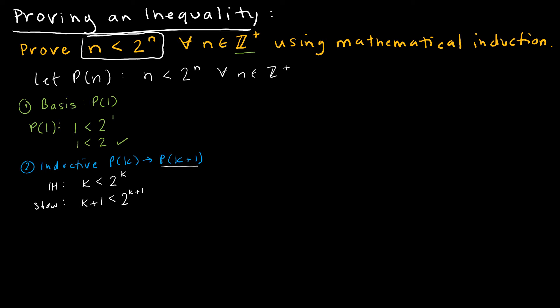So now I'm going to go back to my inductive hypothesis: k is less than 2 to the k. I'm going to do whatever I need to make the left side match what I want to show, so I'm going to add 1 to each side. Here's the tricky part — you're either going to love or hate this. Because it's an inequality, we're not bound by the same rules of an equation. They don't have to be equal to one another.